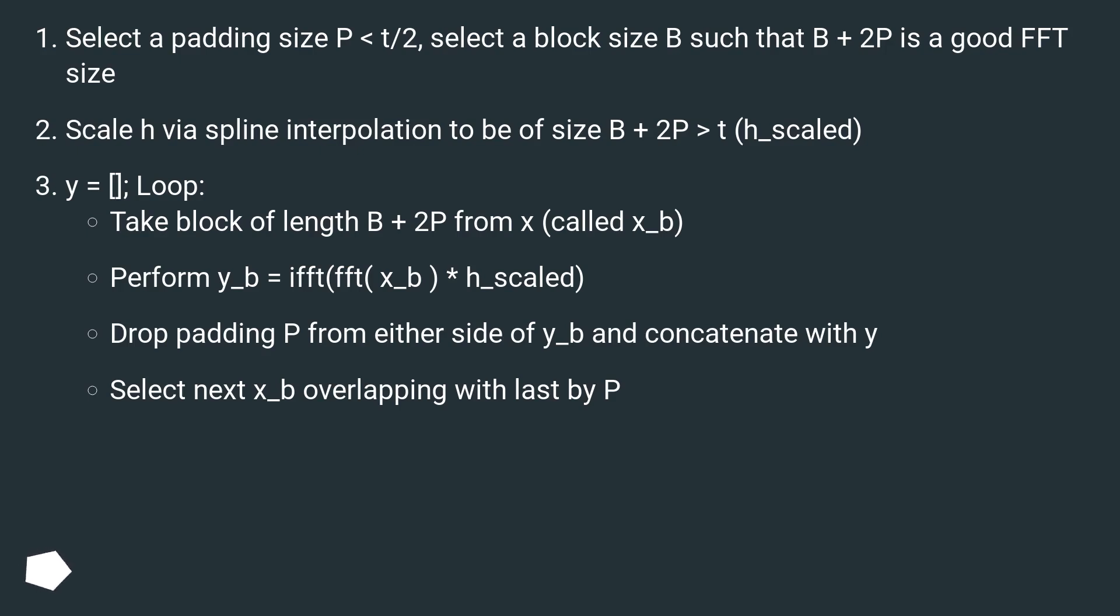y equals empty list. Loop: Take block of length B plus 2P from x, called x_b. Perform y_b equals ifft of FFT of x_b times h_scaled. Drop padding P from either side of y_b and concatenate with y. Select next x_b overlapping with last by P.